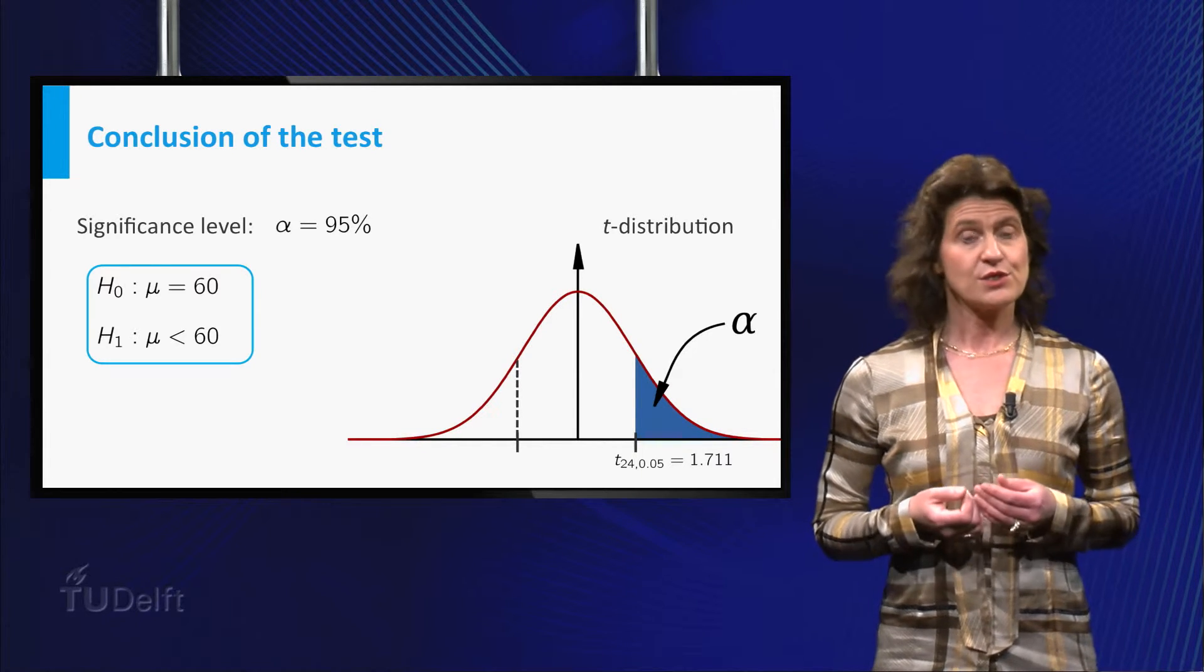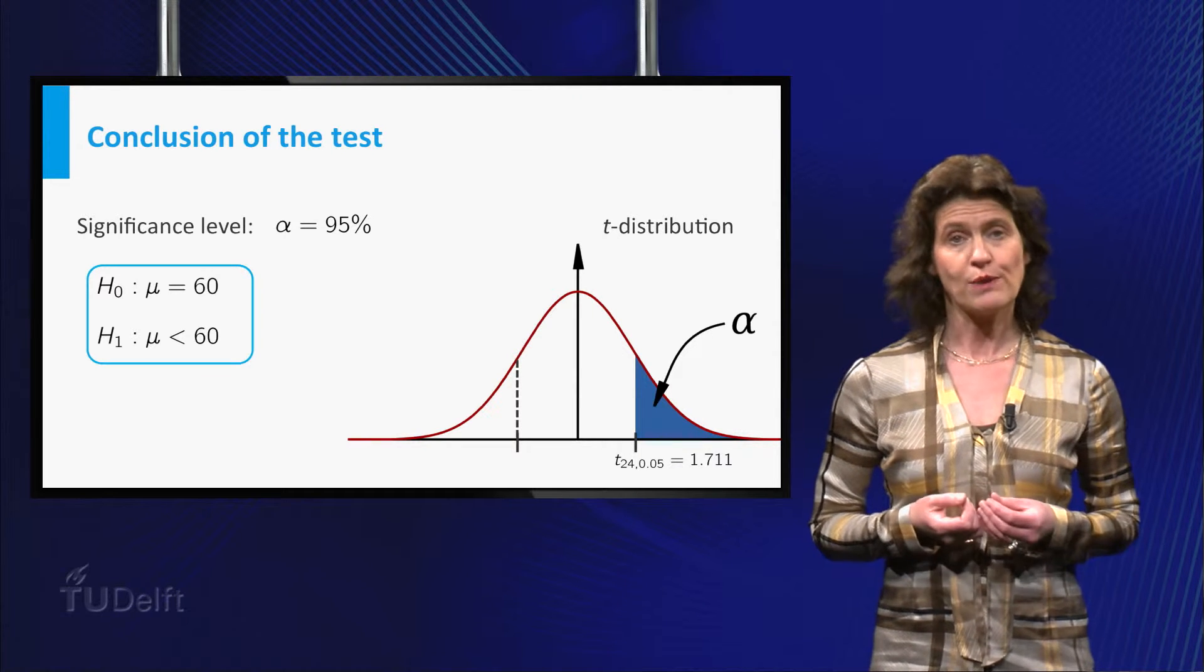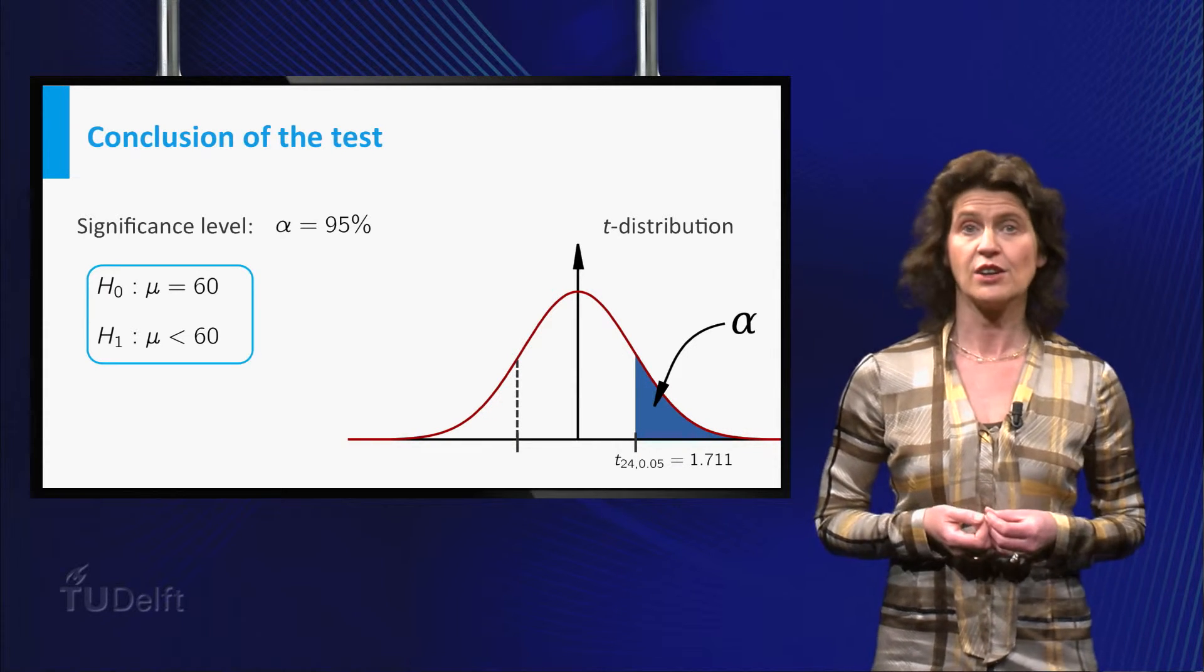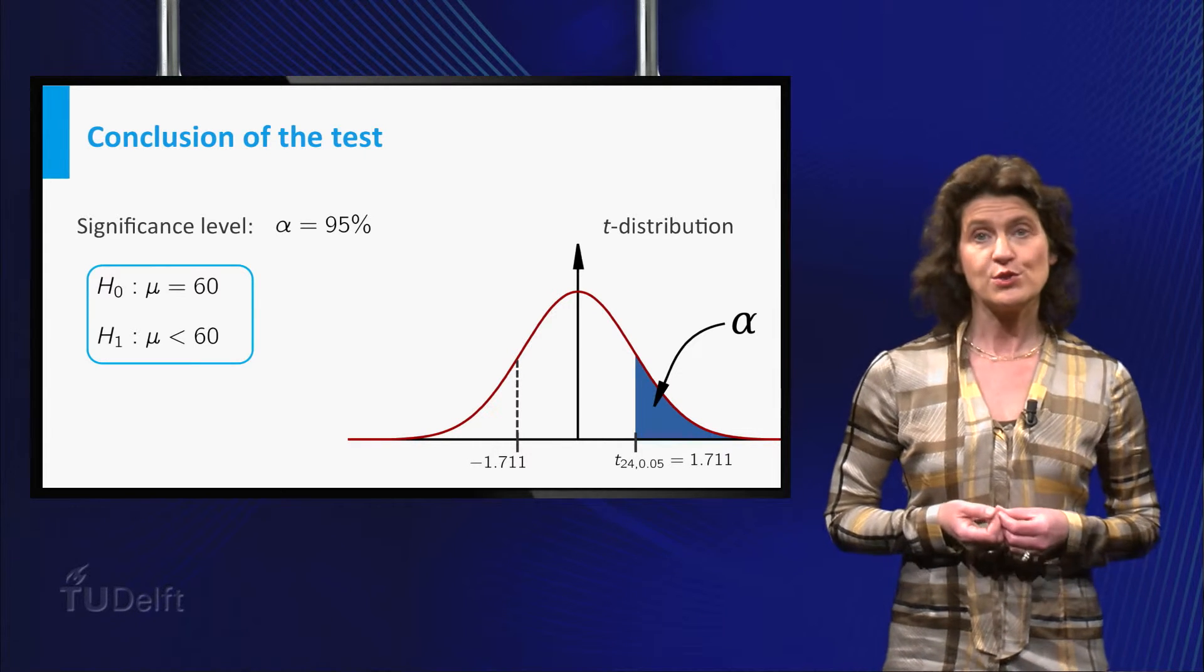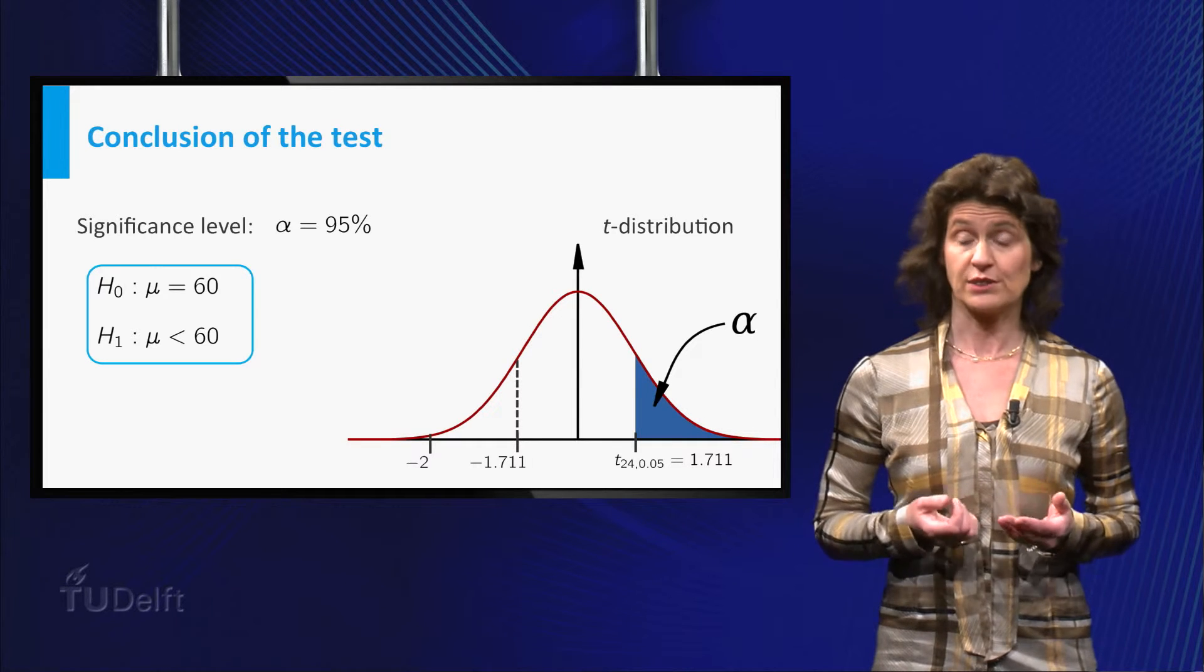Because the t-distribution is symmetric, you compare the value minus 2 of your test statistic to the left critical value minus 1.711. And you see that it does lie in the critical region,